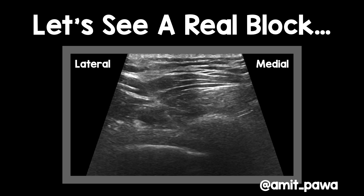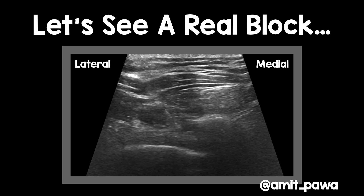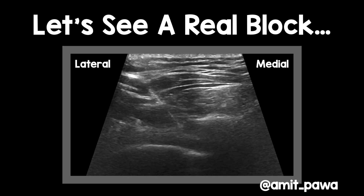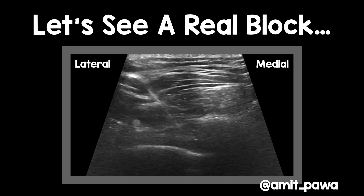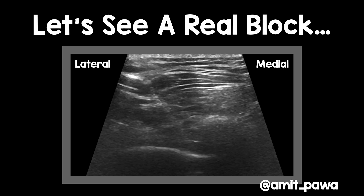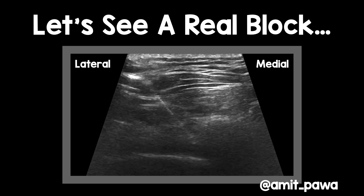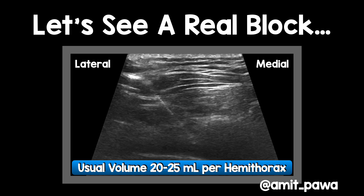Let's see a real block in practice. We've got the same orientation — right is medial, left is lateral. The needle is coming in from the left-hand side of the screen. You can see the shadow of the transverse process and the pleura glistening below. Here's the needle. We're going to use a bit of hydrolocation to see where the needle is. You can see the rectospinal muscle lifting up and out of the way so we can advance a little bit more. As we pop through this tissue, we'll see the needle tip come into view. Once we see the needle tip, we inject local anaesthetic and there's a lovely drop of the pleura that confirms the needle is in the right space. Generally speaking, I tend to use between 20 to 25 mils of local anaesthetic per hemithorax.